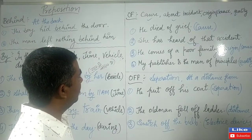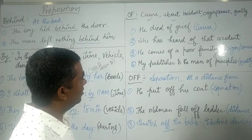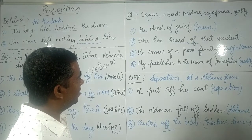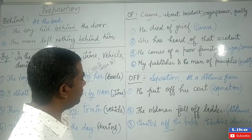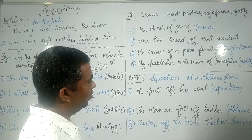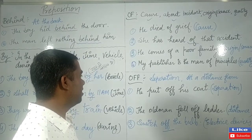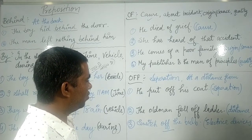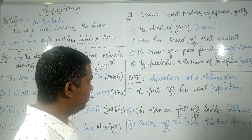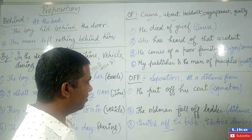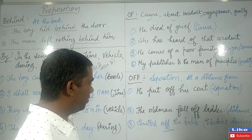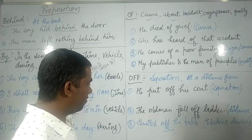She has heard of that incident — that is about the incident. He comes of a poor family — that is origin or source. My publisher is the man of principles — that is quality. For 'off': he put off his coat — that is separation. The old man fell off the ladder — that is at a distance from. Get off the ship; switch off the bulb — these are imperative uses with electric devices, meaning the device is closed.